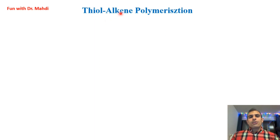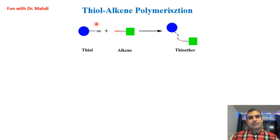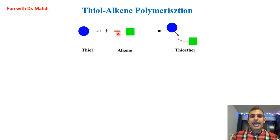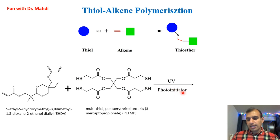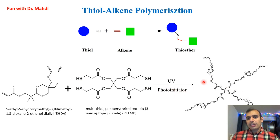Thiol-ene click chemistry is another type of click chemistry reaction that can be used for polymerization. It's a reaction between thiol and an alkene. For doing this reaction, we need UV radiation and also a photoinitiator. After doing the click reaction, the double bond turns into a single bond. For example, in the structure of one monomer we have two double bonds (two alkenes), and in the structure of the other monomer we have four thiol groups. After UV radiation with a photoinitiator, we will have a polymer like this.